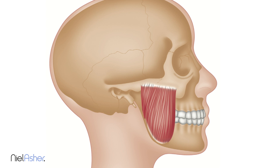When the masseter contracts, it will pull the jaw joint upwards and close the mouth. It is a very powerful muscle and when on full power it will exert considerable force.